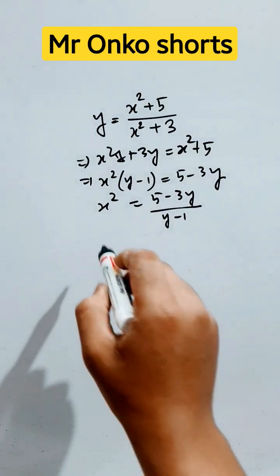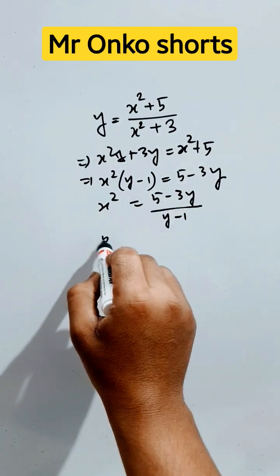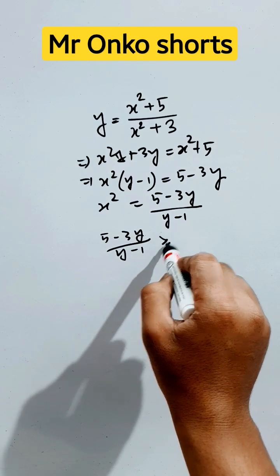So x square is always greater than or equal to 0. So this term will be greater than or equal to 0. So 5 minus 3y divided by y minus 1 is greater than or equal to 0.